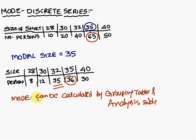You have to go for the grouping table and analysis table and do the problem. So here if you consider, 65 is the maximum frequency.